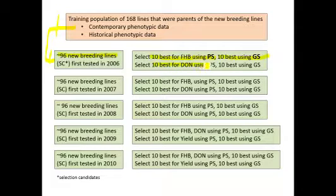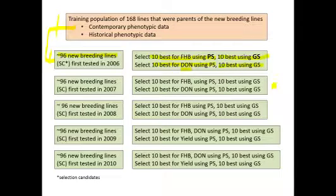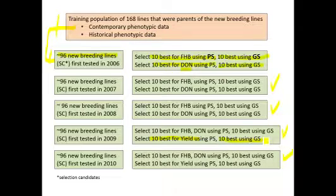They did the same thing for another fusarium head blight related trait — DON, which is deoxynivalenol content, a toxin produced by the fungus — selecting the 10 best for low DON values using both phenotypic and genomic selection. This was repeated in the second, third, fourth, and fifth prediction sets. In the fourth and fifth sets they also selected the 10 best for yield using both phenotypic and genomic selection.